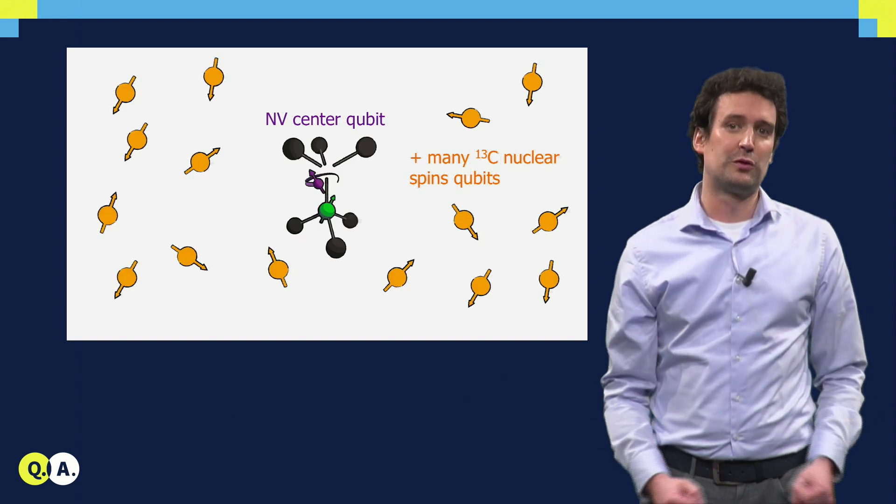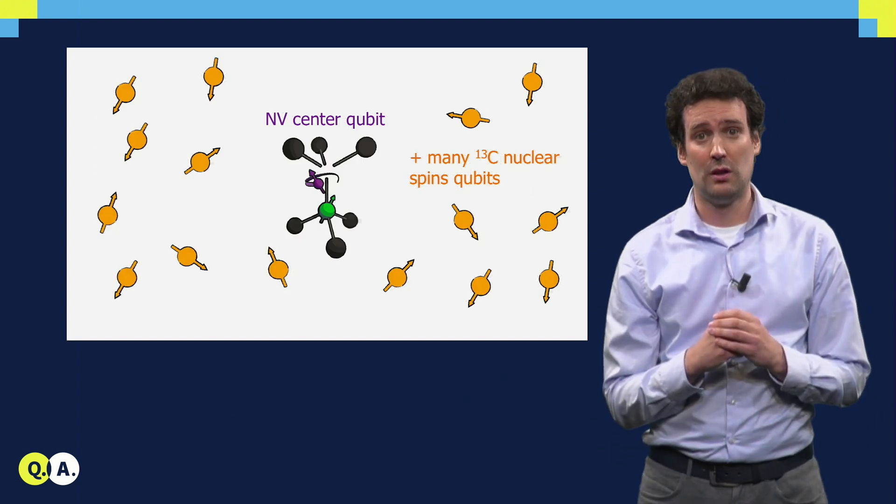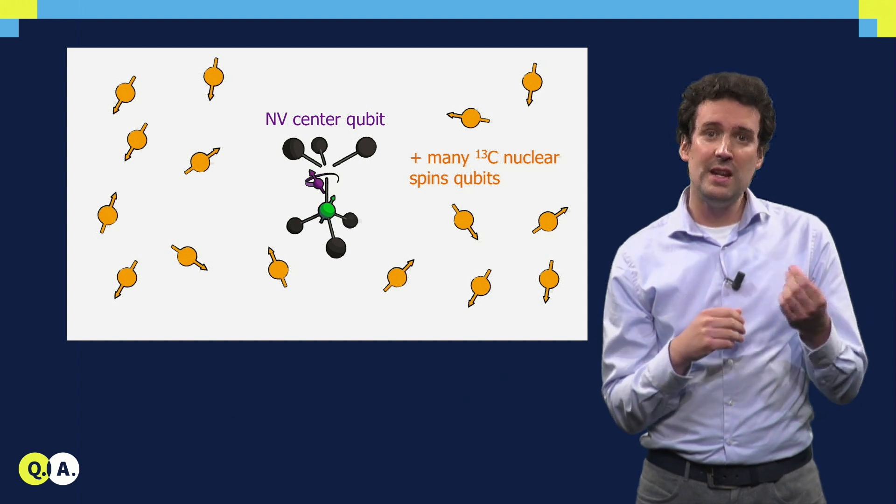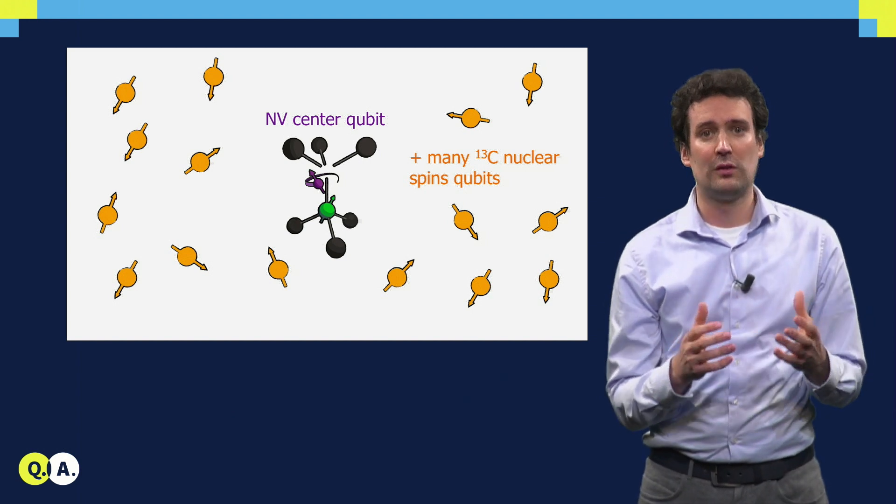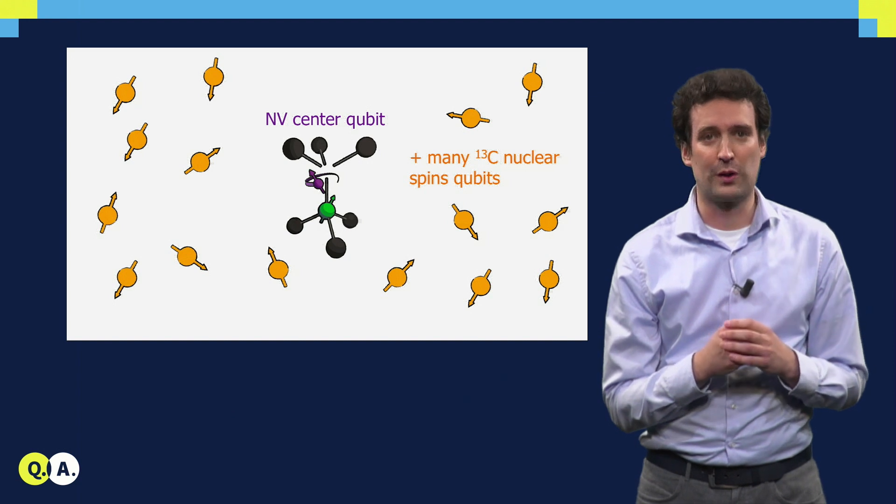This enables us to control multiple nuclear spins near a single NV center, and each NV center becomes a system of 5 or even more qubits.